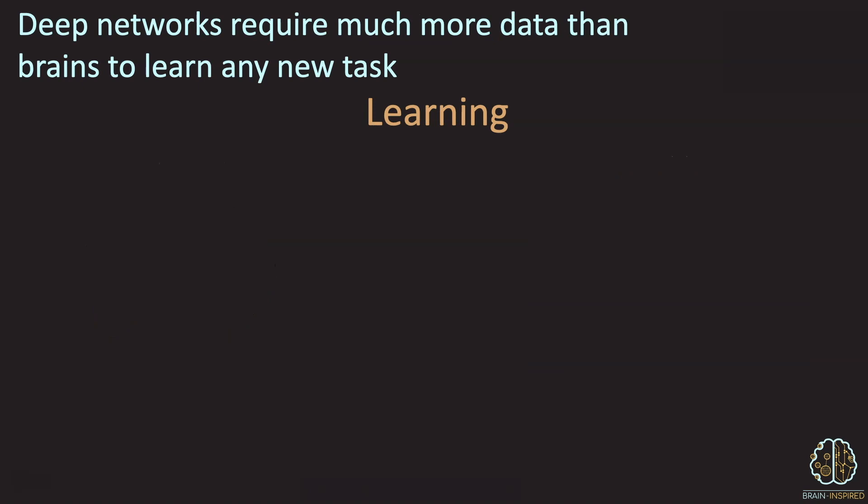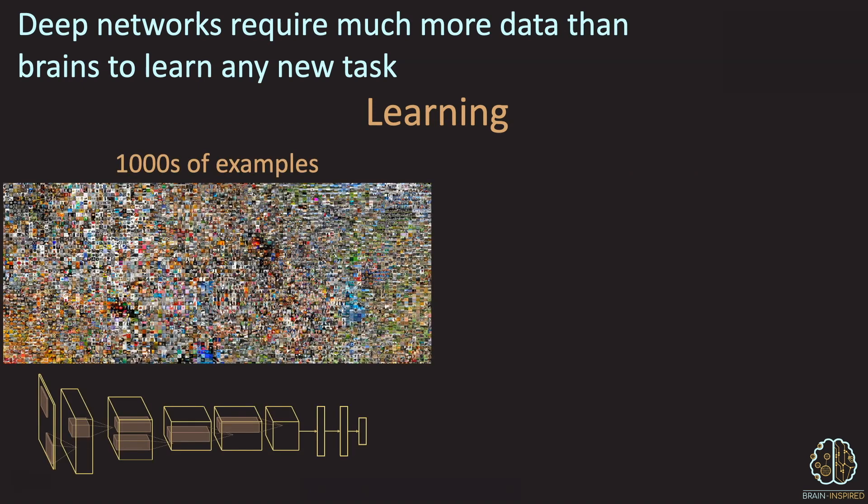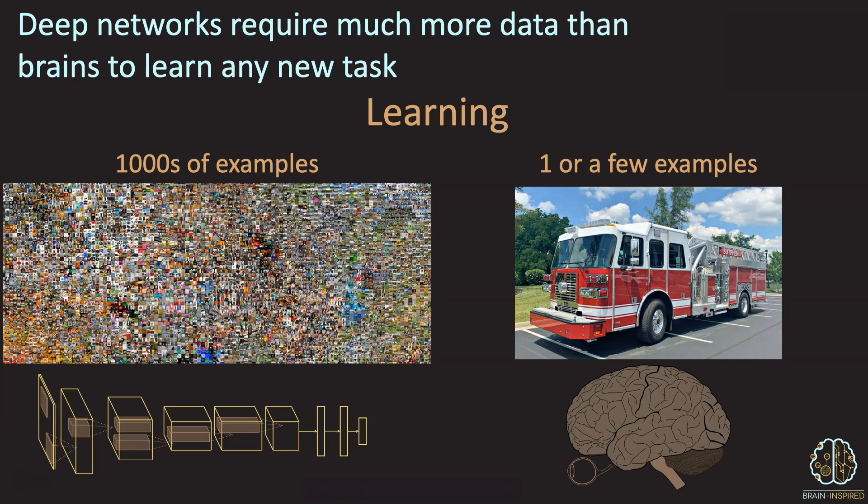The other sense of efficiency is learning efficiency. Deep networks require thousands or millions of training examples to perform well on their narrow tasks. Whereas if I show a child a picture of a firetruck, she can learn it in just one or just a few examples, called one-shot and few-shot learning. This again is an active field in AI research, but it's unsolved. So that's the second question. How to make AI more efficient, in both senses of the term.